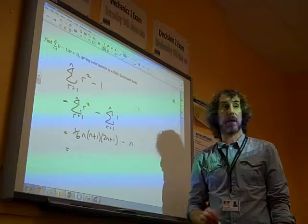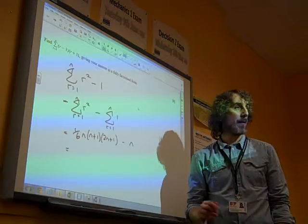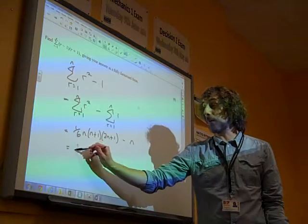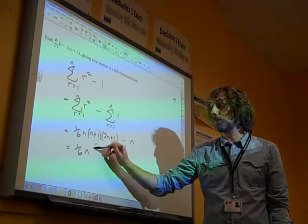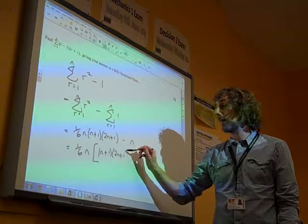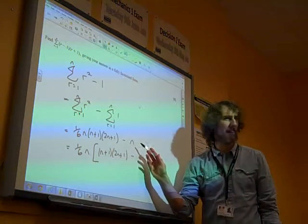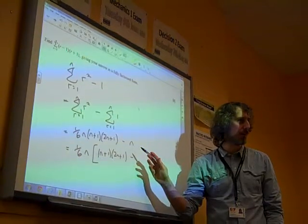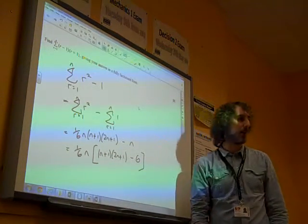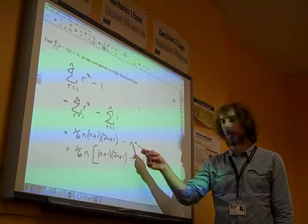Now we need to do our fully factorised form. We've got a common factor of n. We're going to take a sixth out as a common factor as well. So that gives us n plus 1, 2n plus 1 there. And if we've taken out a sixth of n as a factor of that, then it's sixth that we need to have there in order to make it match up. A sixth of n times 6 is n.